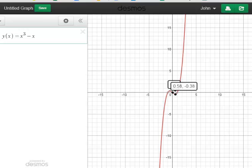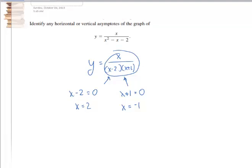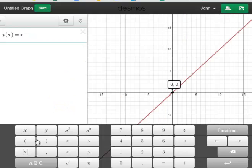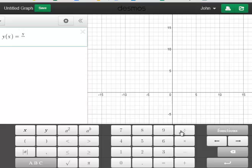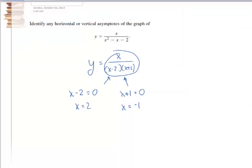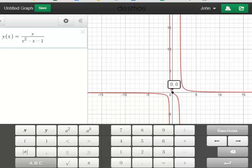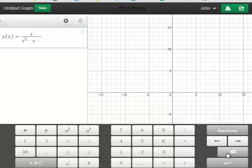When I go to Desmos, I'm going to put in the function. Let me just take another look at that function. It's going to be x divided by the quantity x squared minus 2x. I think it's minus 1. Let me double check that. It's minus x minus 2. So, let me change that. Minus x minus 2.